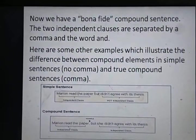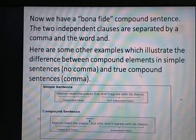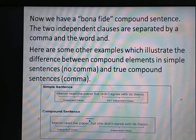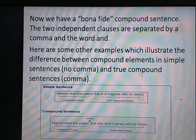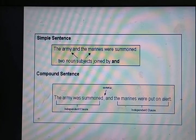Simple sentence example: 'Marion read the paper but did not agree with its thesis' — यहाँ 'did not agree' independent clause नहीं है इसलिए but से पहले comma नहीं है। Compound sentence: 'Marion read the paper, but she didn't agree with its thesis' — यहाँ दोनों independent clauses हैं इसलिए comma भी लगेगा और conjunction भी आएगा।